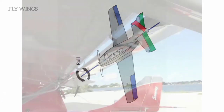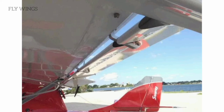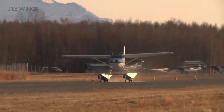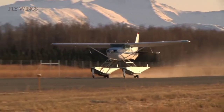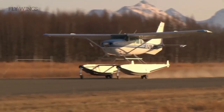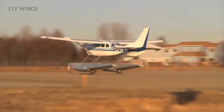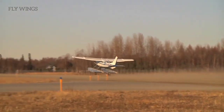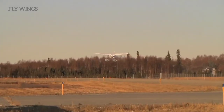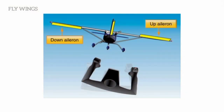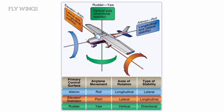Ailerons control roll about the longitudinal axis. The ailerons are attached to the outboard trailing edge of each wing and move in the opposite direction from each other. Ailerons are connected by cables, bell cranks, pulleys, and/or push-pull tubes to a control wheel or control stick.